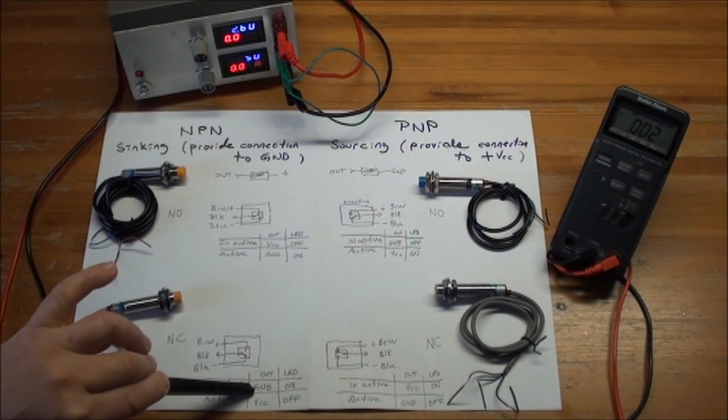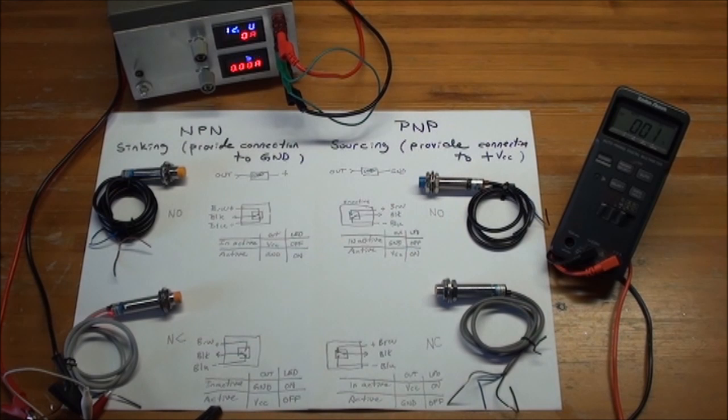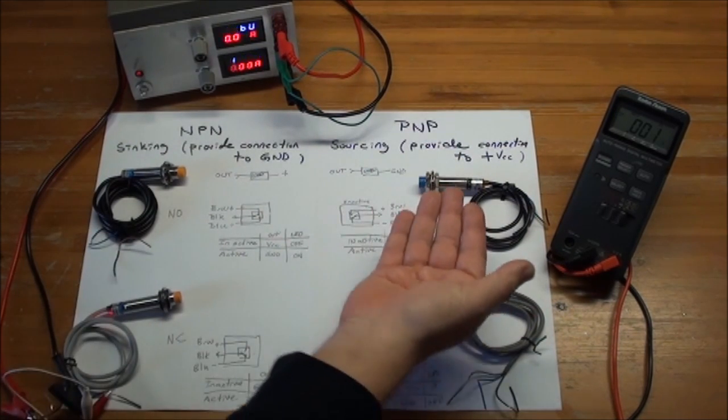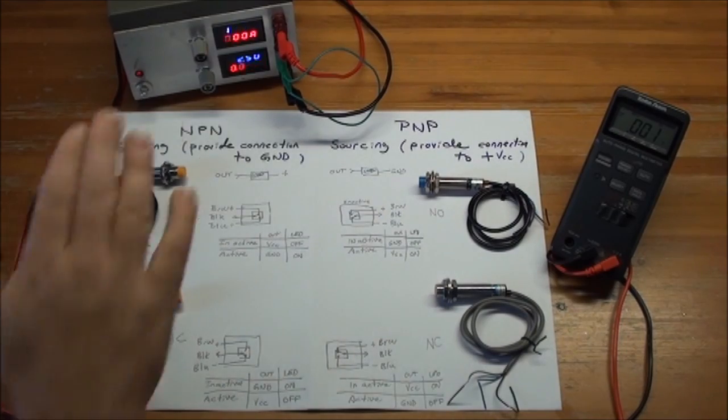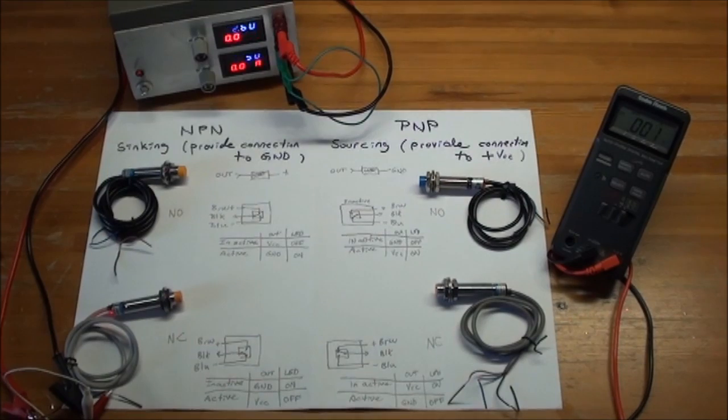So basically the little table here is a mirror down here. So inactive, you get ground out in the inactive state. The LED is on. In the active state, you get 24 or the power supply output out and the LED goes off. So what happens over here, of course, it's basically just a mirror image again, and I'll rig up one of them.